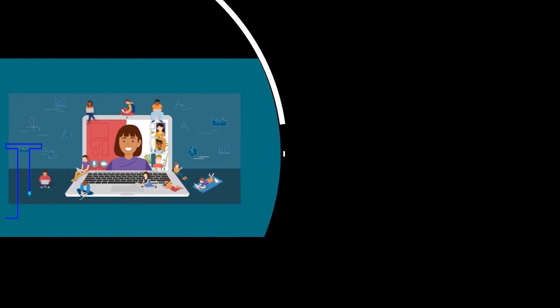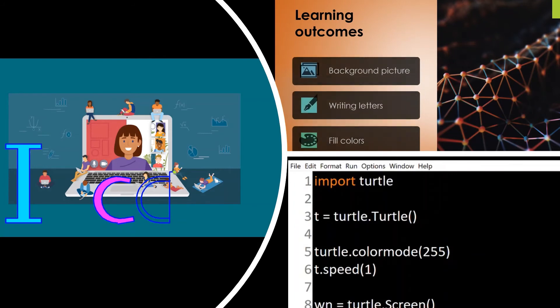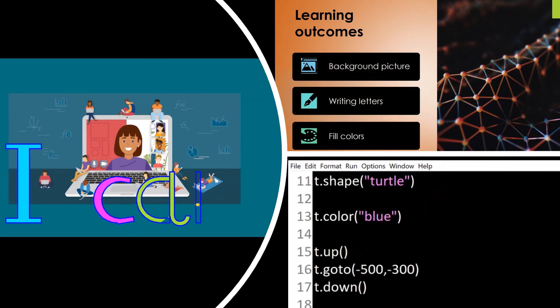So students, here we learn how we can add background color, a background image, and how we can use the knowledge of shapes to form letters and finally a word.